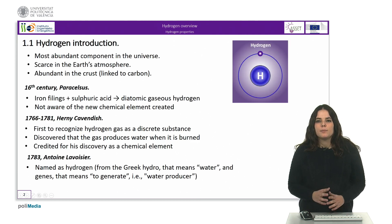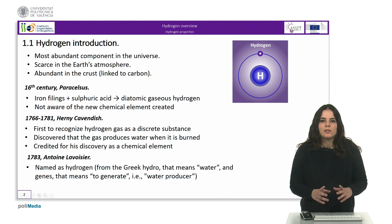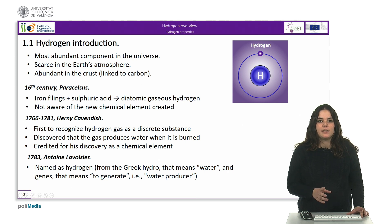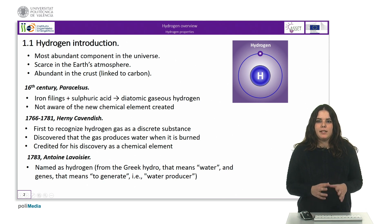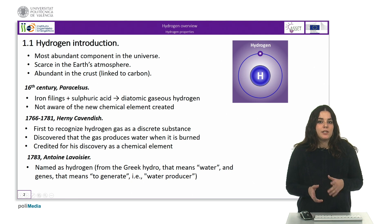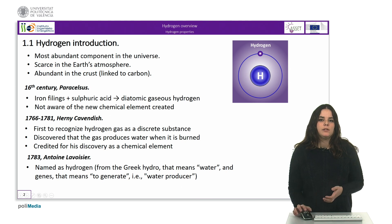Hydrogen is the most abundant component in the universe, constituting three-quarters of it. The presence of hydrogen gas in the earth's atmosphere is scarce due to its high diffusivity. However, it is abundant in the crust where it is generally linked to carbon. Hydrogen is always combined with other elements, which is a drawback when it comes to using it alone.